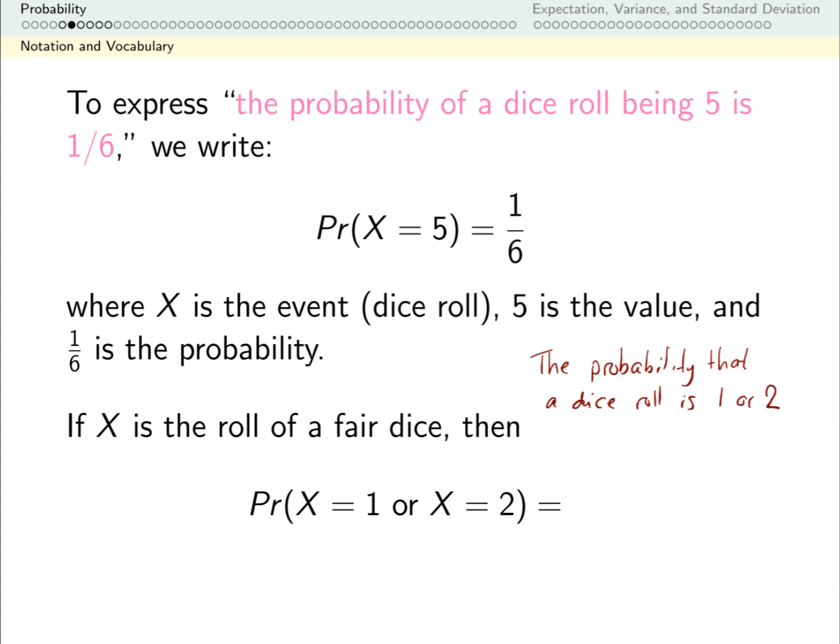So this expression means the probability that a dice roll is 1 or 2. Probabilities are numbers between 0 and 1. So let's think about what number that is. Well, all six dice rolls are equally likely. And I'm concerned with 2 out of those 6 possibilities. So it's reasonable to assume roughly 2/6 of the time, which is the same as 1/3. When I roll a dice, it's going to come up with a 1 or a 2.